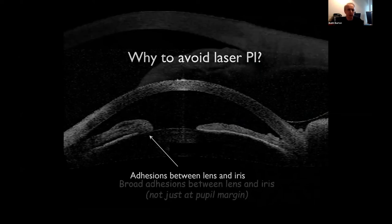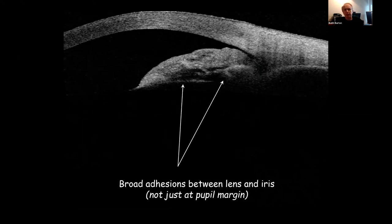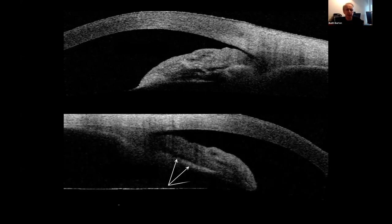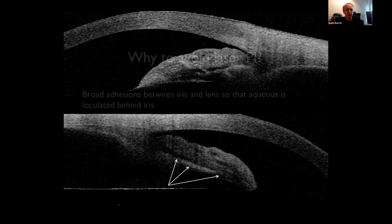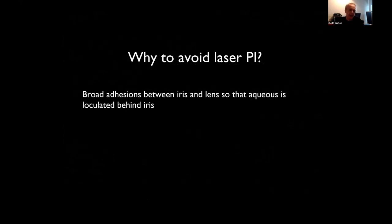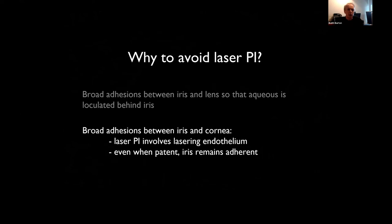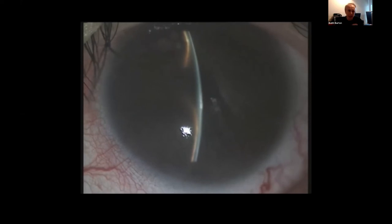On OCT you can see the adhesions, and more than that — it's just a thick, boggy iris, not just adhesions, with little cysts here and there. It's not somewhere you can just laser and get a reduction in pressure. Also, as I showed earlier, if the iris is stuck against the cornea and you laser it, you're lasering the cornea. Not only is it stuck, it's stuck with fibrin — so if you laser and make a hole, the iris doesn't fall back; it's still stuck to the trabecular meshwork.